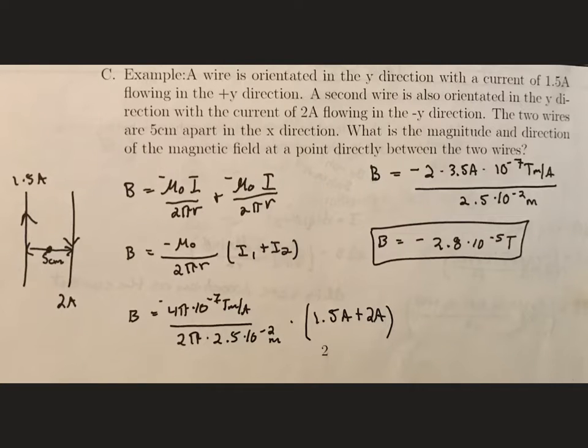This is example problem C at the bottom of page 2 of your chapter 28 lecture notes. In this example problem, we have a wire in the positive y direction with a current of 1.5 amps flowing in the positive y direction.